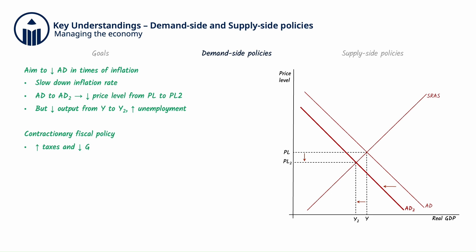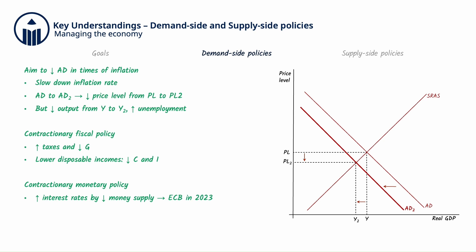This is because increasing taxes will lead to lower disposable incomes and thus decrease the C and I components of AD, and decreasing G will also directly decrease AD. Contractionary monetary policy involves increasing interest rates by decreasing the money supply, such as the ECB's (European Central Bank's) decision to raise interest rates in 2023 to help fight inflation in the Eurozone. Higher interest rates encourage more saving and less borrowing, and so the C and I components of AD will decrease as a result.